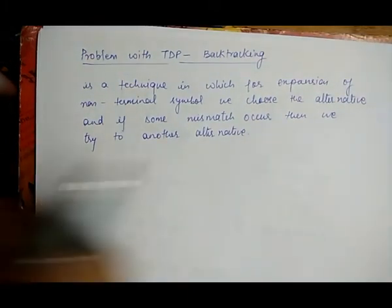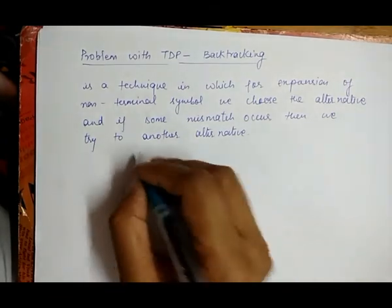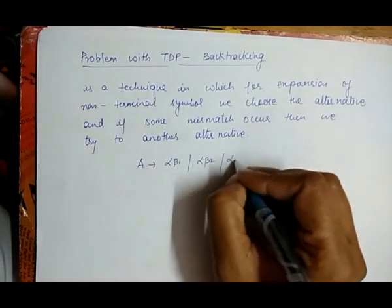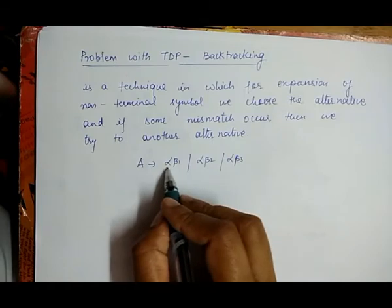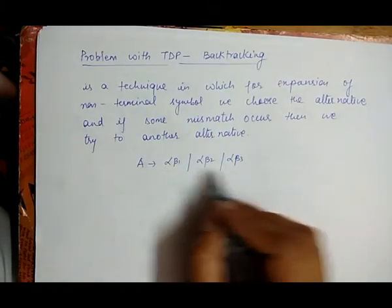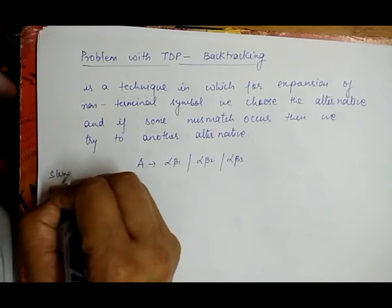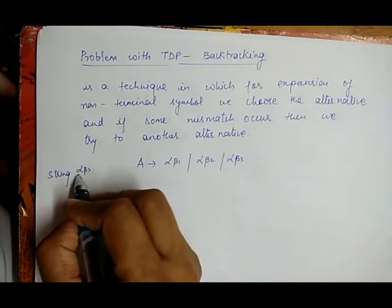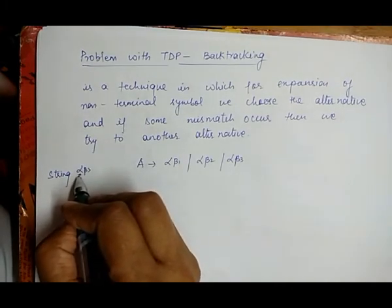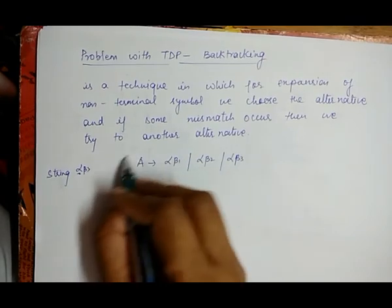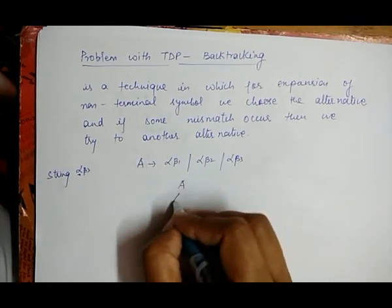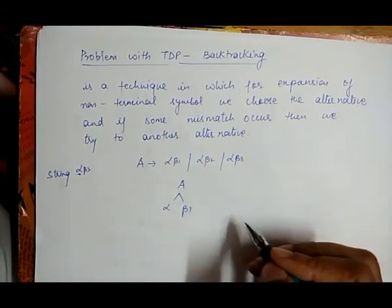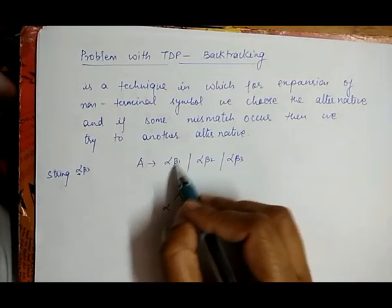For example, if a grammar is non-deterministic like A derives alpha-beta1, or alpha-beta2, or alpha-beta3, where we have a common prefix in all the productions. Now if we have to parse a string alpha-beta3, the parser looks at the starting point, which is alpha, and considers the first production A derives alpha-beta1, but the string we need to generate is alpha-beta3, which is not possible with this alternative.